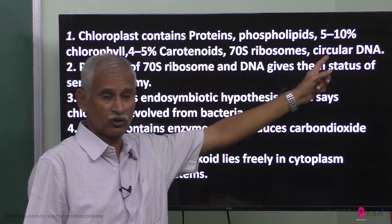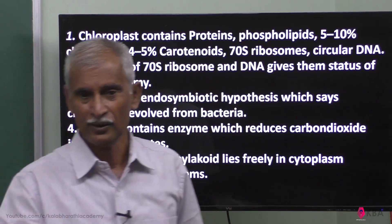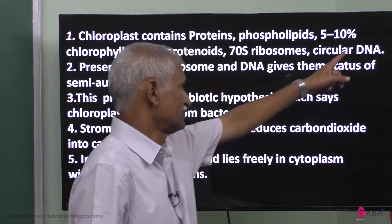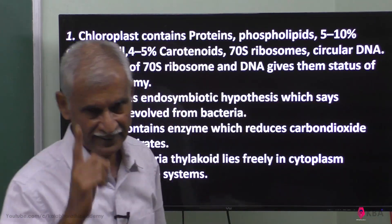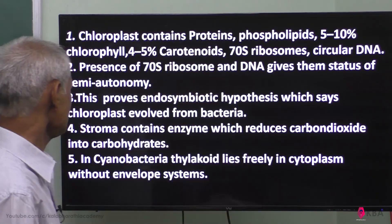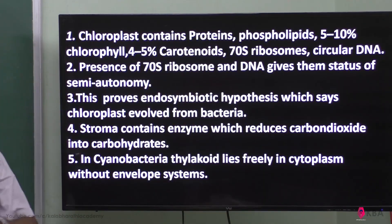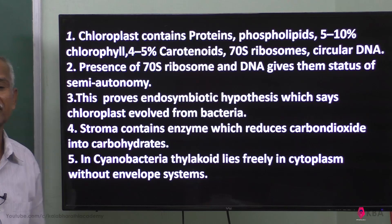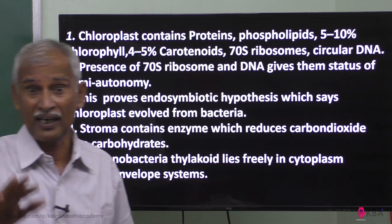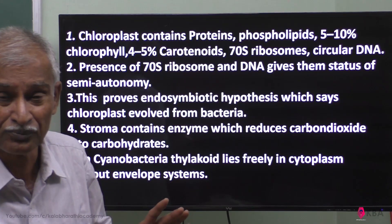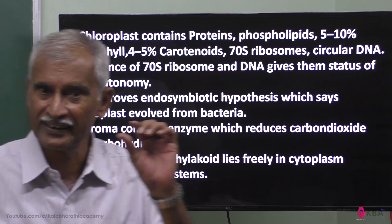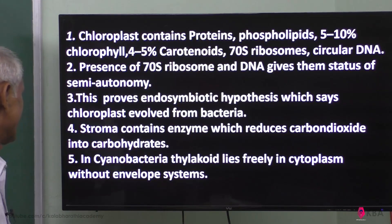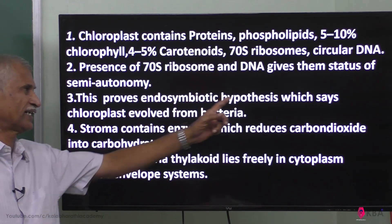Chloroplast also contains 70S ribosome and circular DNA. The presence of 70S ribosome and DNA gives them the status of semi-autonomy. Some functions are done independently, but other functions are done with the help of the cell. That is why it has 70S ribosome and DNA.